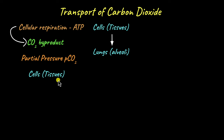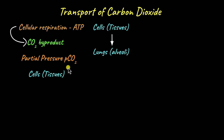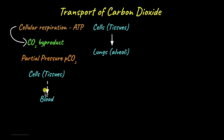Why? Because as a result of cellular respiration, more and more CO₂ is going to be produced and accumulate within the cells. Compared to oxygen, the concentration of carbon dioxide is going to be high, which results in a higher partial pressure of carbon dioxide within the cells. Compared to the cells and tissues, the partial pressure of carbon dioxide is going to be less in the blood.